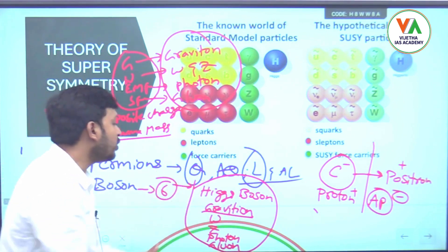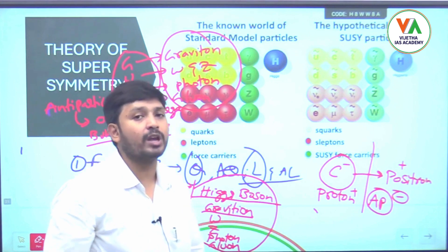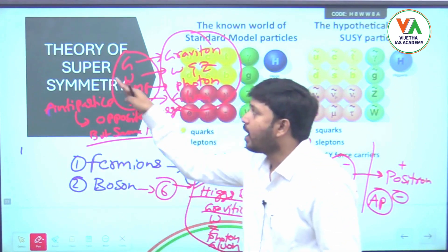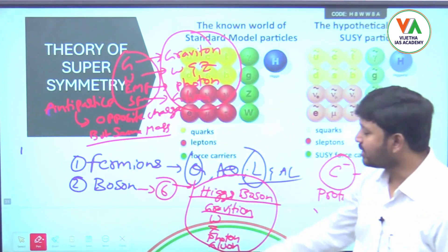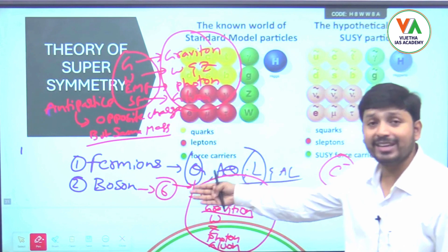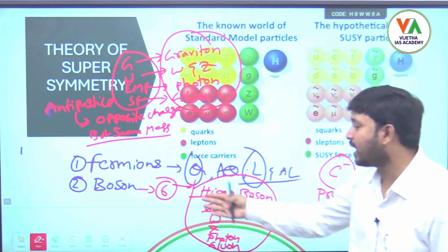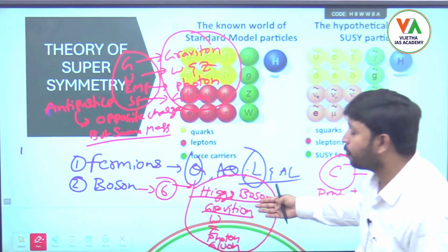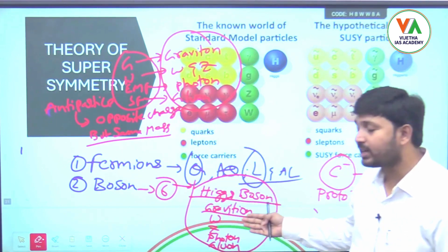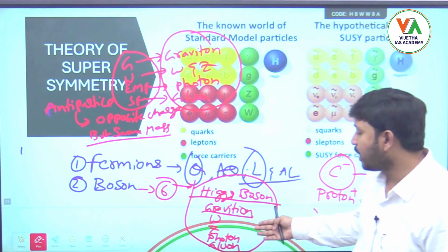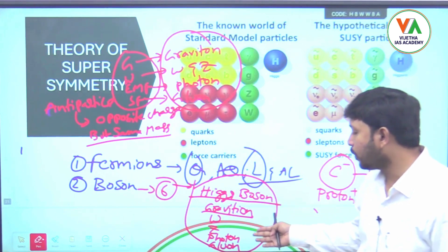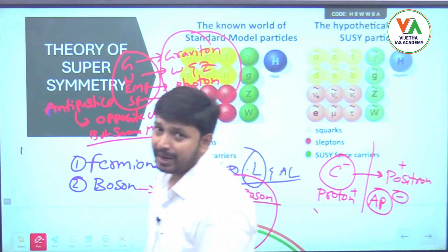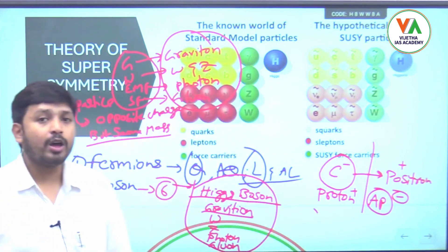The new one added in this theory of supersymmetry is Higgs boson — the sixth boson. So the six force-carrying particles or bosons are: Higgs boson, graviton, W, Z, photon, and gluon.